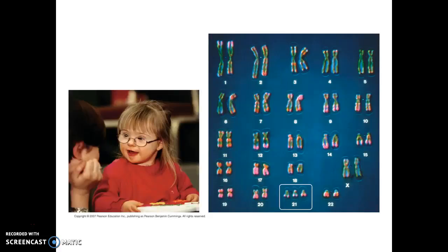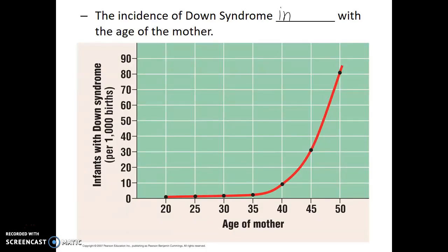Here we see a karyotype of a human female who has Down syndrome. Down syndrome, also known as trisomy 21, is caused when an individual has three copies of chromosome 21 instead of just two. The incidence of Down syndrome increases with the age of the mother because females are born with all the egg cells they will have for their entire life, so as the mother ages, the cellular machinery that allows chromosomes to separate is also aging. However, just because a child has Down syndrome doesn't mean it was the mother's gamete that had the improper number of chromosomes — there is an error rate in sperm production as well; it just doesn't correlate with age in the same way.